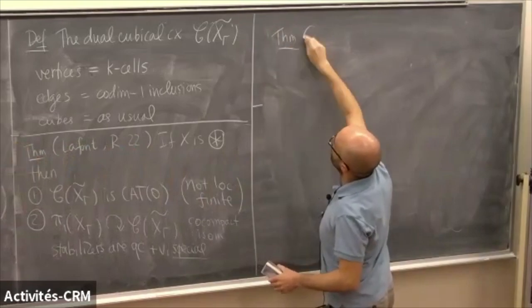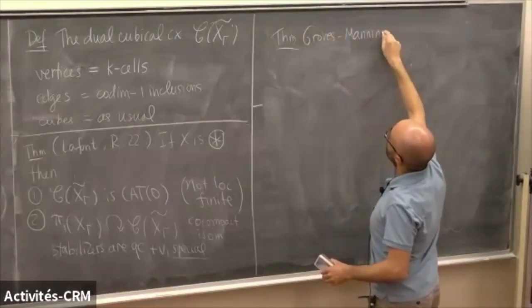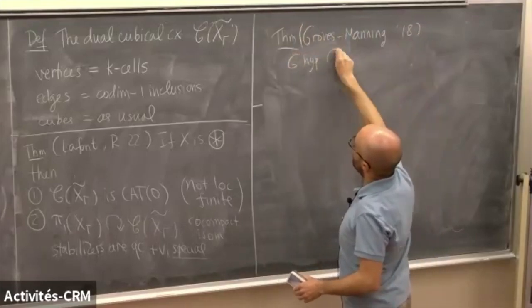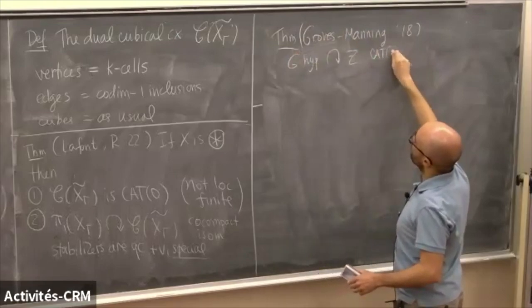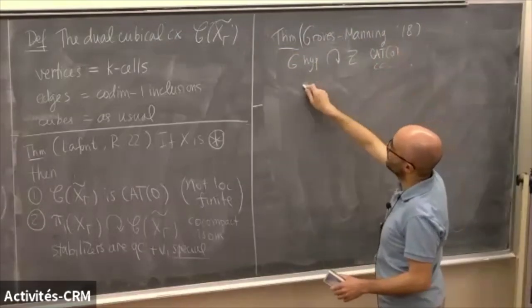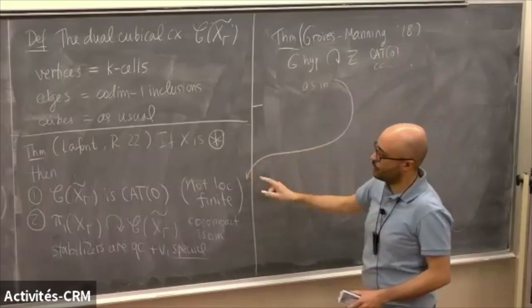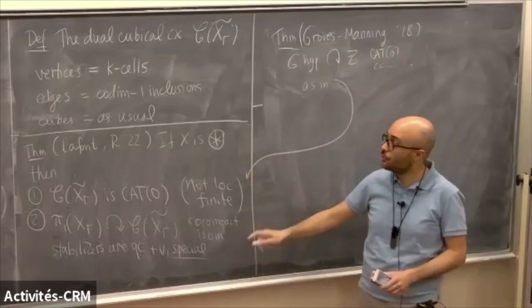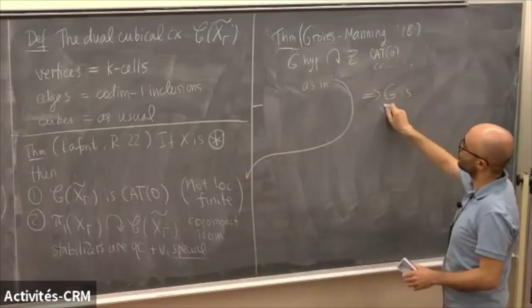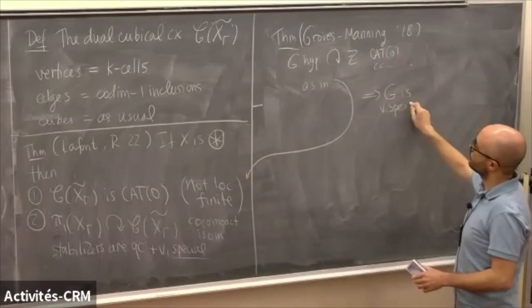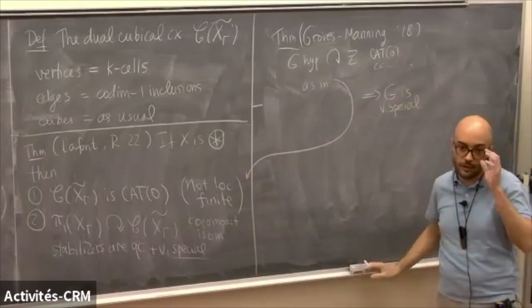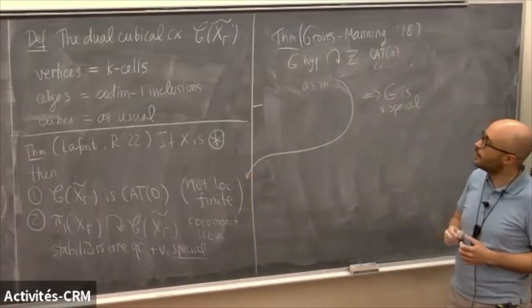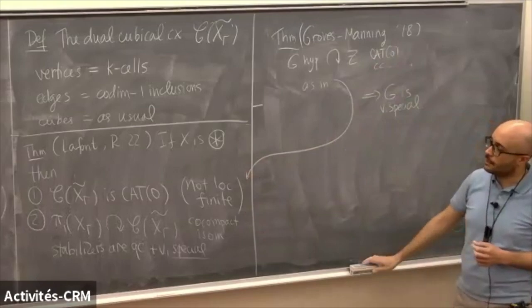This feeds into a theorem of Groves and Manning from 2018: if G is hyperbolic and acts on a CAT(0) cube complex co-compactly by isometries, and the stabilizers are quasi-convex and virtually special, then G is virtually special. So when the action is proper one uses Agol's result; when the action is not proper but stabilizers are controlled, this Groves-Manning result gives the same conclusion.